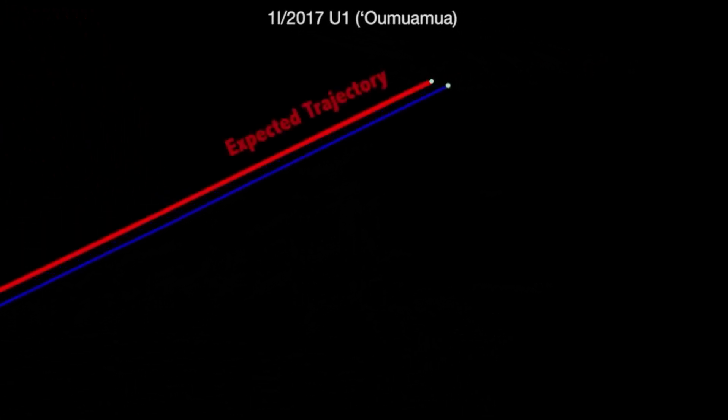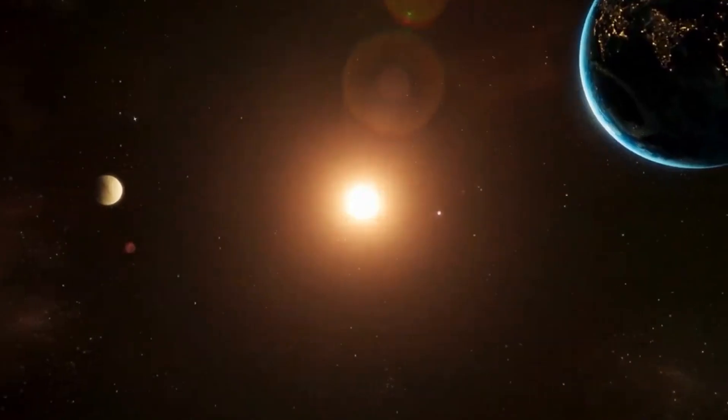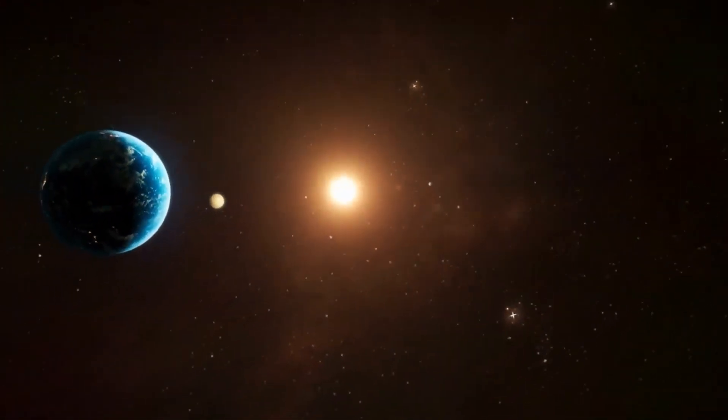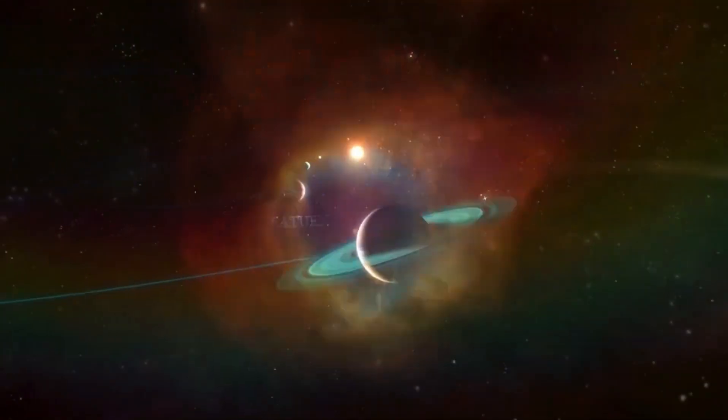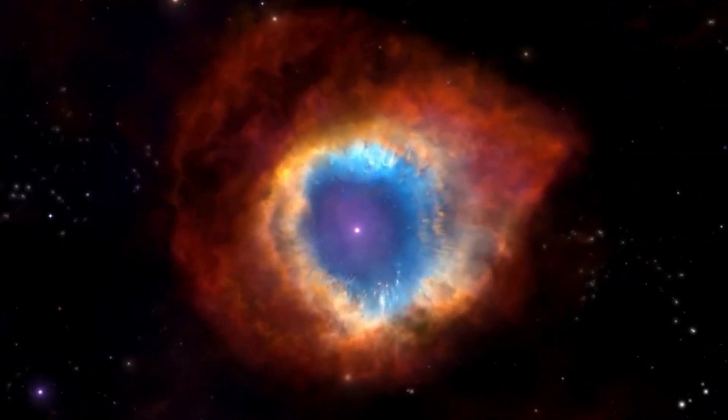But Oumuamua's surprises didn't stop there. Its rapid gyration, coupled with an inexplicable acceleration, especially as it journeyed away from the sun, left the scientific community in a state of perplexity.